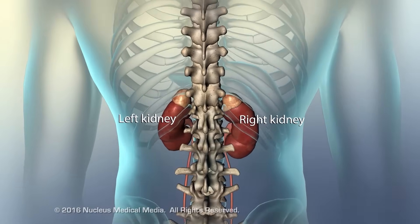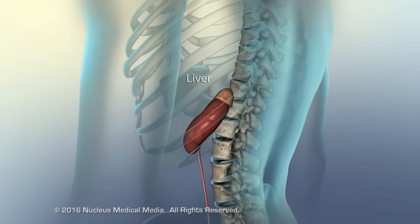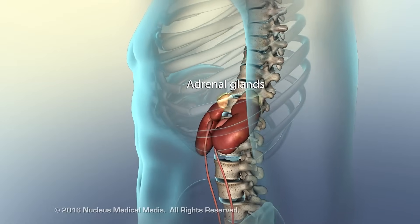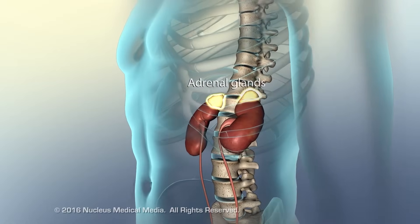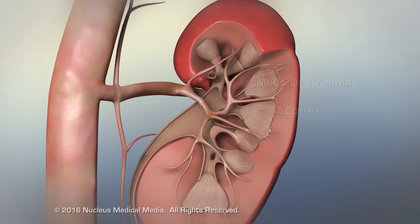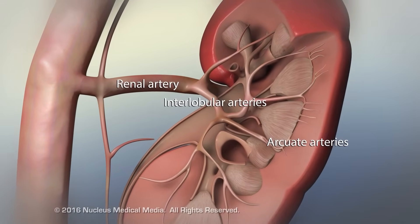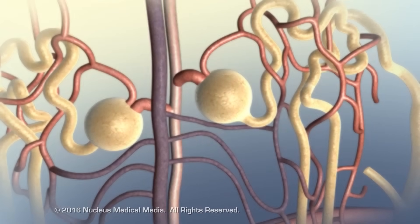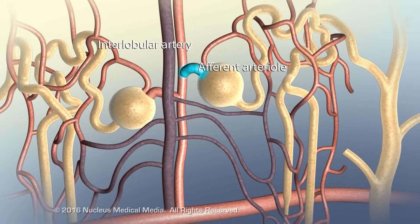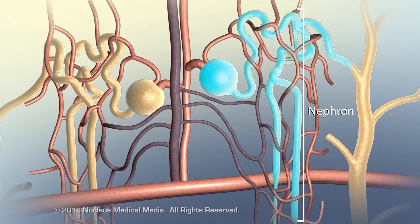The kidneys are located on either side of the spinal column in the posterior abdominal wall. Adrenal glands sit on top of the kidney. The medullary pyramid and outer cortex compose the renal lobe. Branches of the renal artery supply each renal lobe. The smallest branches of the renal artery, called afferent arterioles, supply the excretory components of the kidney, called nephrons.